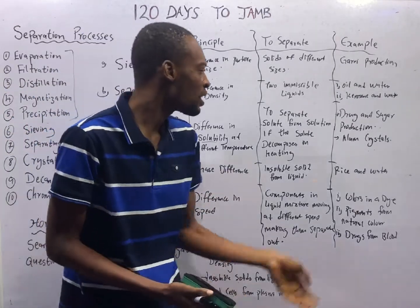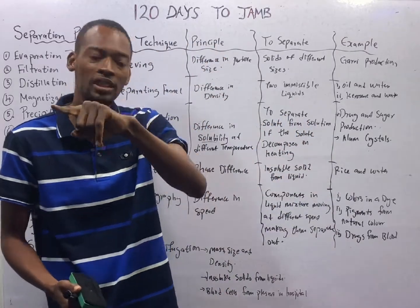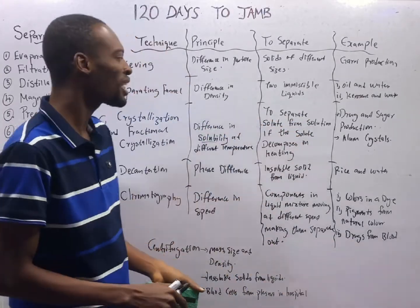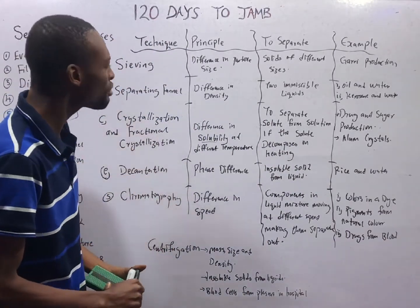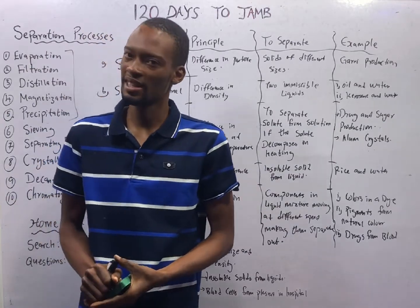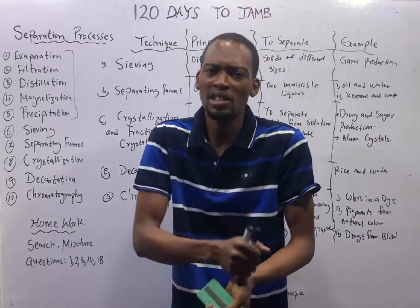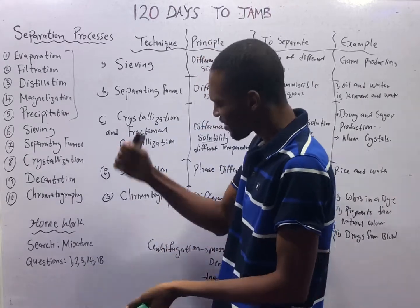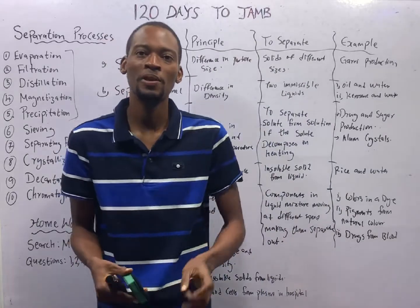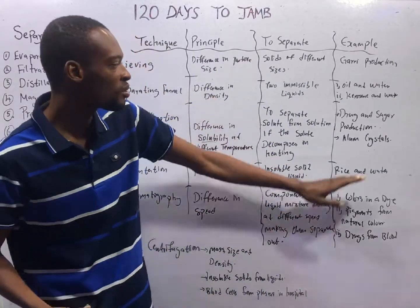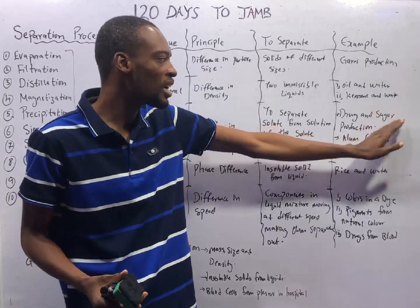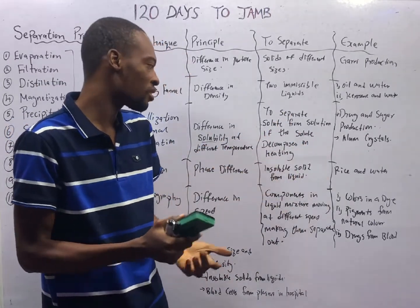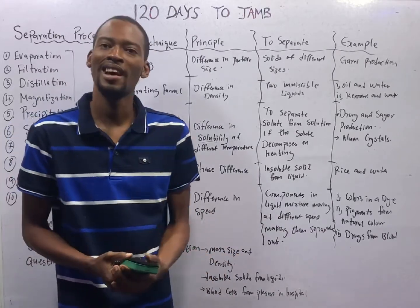In evaporation, we separate solute from solution if the solute does not decompose from heating. But in crystallization, it is used when the solute decomposes from heating. More importantly, anytime purity is very important, we use crystallization — it is a separation technique used when purity is of utmost importance. When you see drugs or sugar in the question, crystallization is likely the answer because they require high levels of purity. In alum crystals, drug and sugar production, we employ crystallization. The principle is based on difference in solubility at different temperatures.